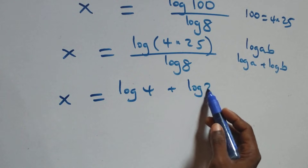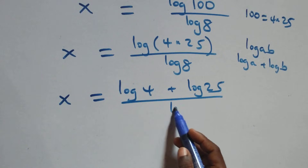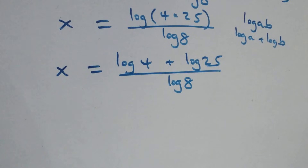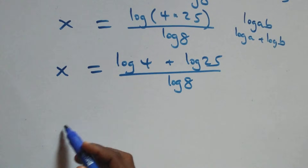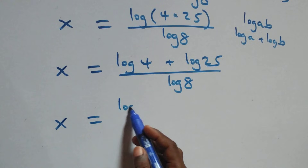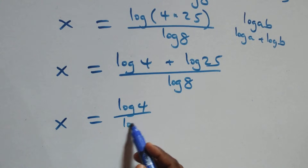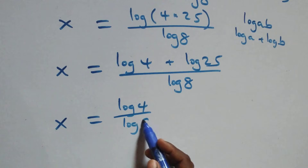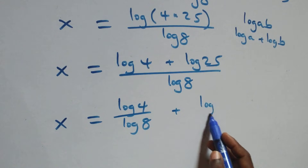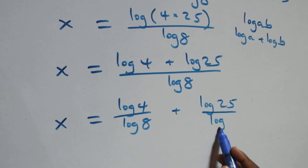Then we separate this into two fractions and we have x equals to log 4 over log 8 plus log 25 over log 8.